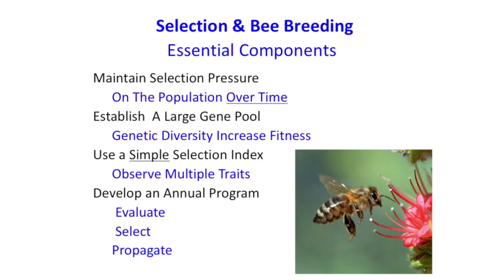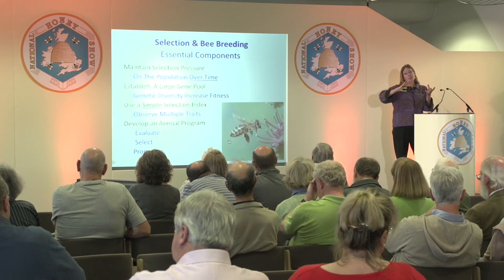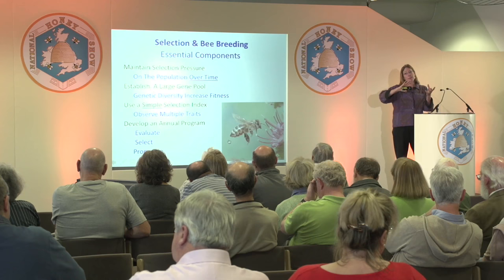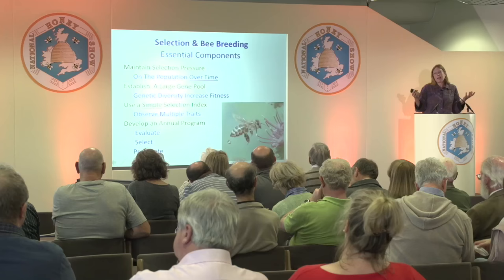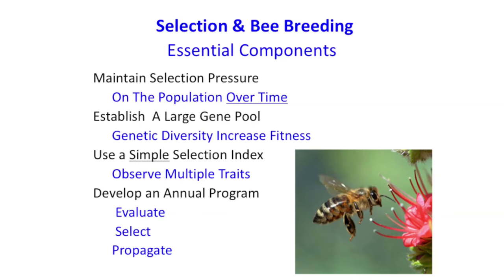The basic thing here is maintaining selection pressure on this population over time. You're trying to enhance natural selection — you're trying to enhance whatever the bees are doing and skew them toward more productivity, but at the same time more uniformity. Genetic diversity is really important. It increases general fitness. Not only do you avoid inbreeding problems, but you just get loss of vigor if you don't have a good gene pool. The selection method I use is very simple: you're selecting several traits simultaneously over time. We evaluate, select, and then propagate the bees.